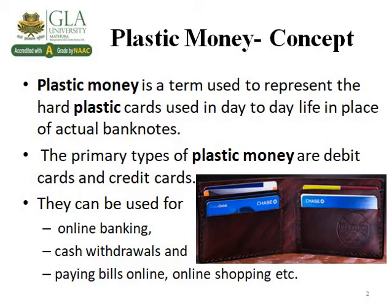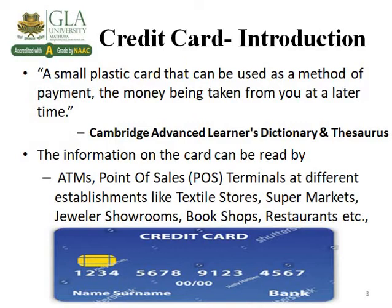Coming to credit cards — a credit card is a small plastic card that can be used as a method of payment, with the money being taken from you at a later time. This definition is from the Cambridge Advanced Learner's Dictionary. It highlights that you can use the card at any point of time but payment is made later. This is known as 'buy now pay later' for credit cards, and 'buy now pay now' for debit cards.